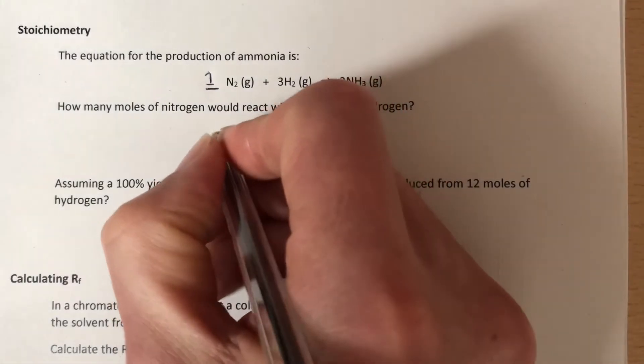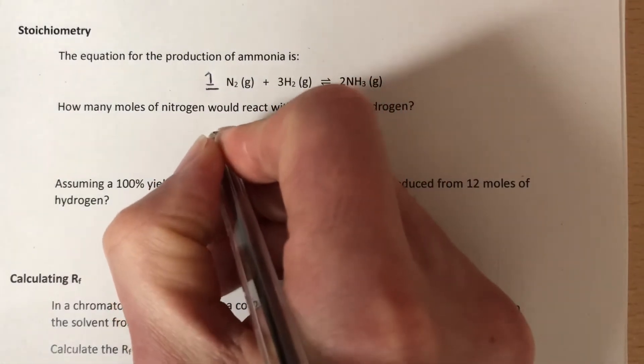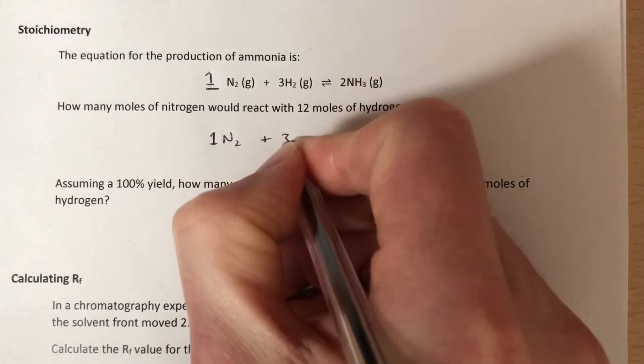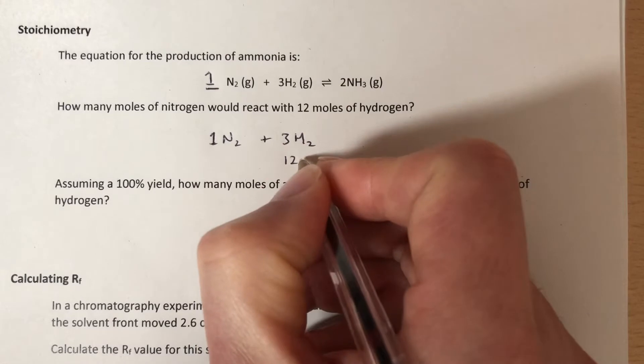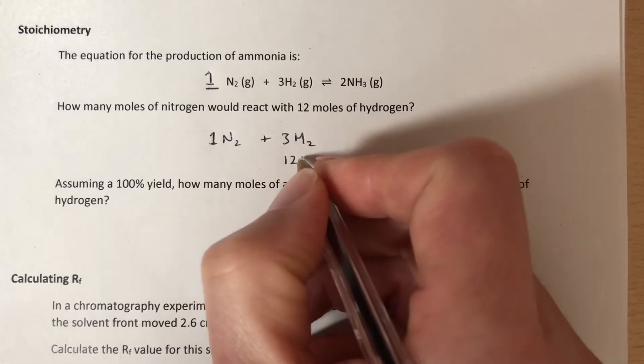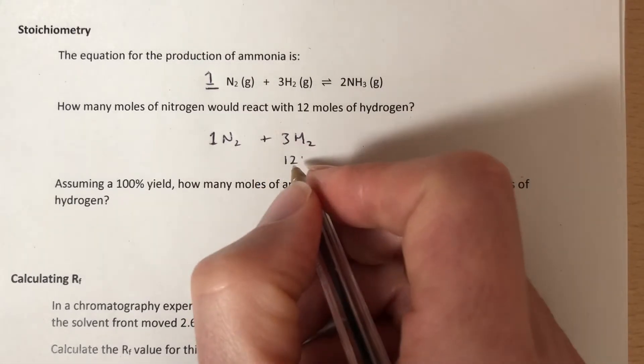So we've got one nitrogen, that's what the equation here tells us, one nitrogen reacts with three hydrogens. Now we don't have three hydrogens, we've got 12 hydrogens. So let's write 12 underneath that there.